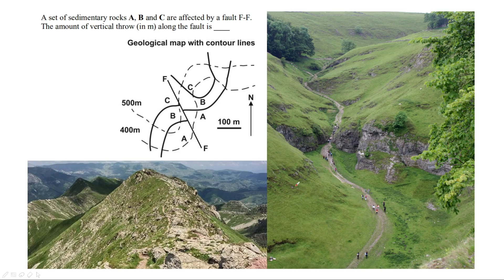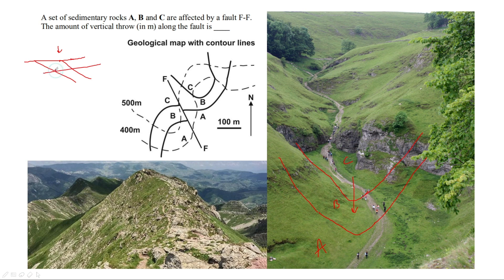Similarly, the case would be for a valley. If the beds are dipping in this direction, the outcrop pattern would be like this — with layers A, B, and C. Same case: where if you start digging and reach to this level, the outcrop will be exposed here, which was previously exposed at this point. So it is moving this side. As you are moving down the slope in this direction, each and every point of the outcrop is moving towards the dip direction.